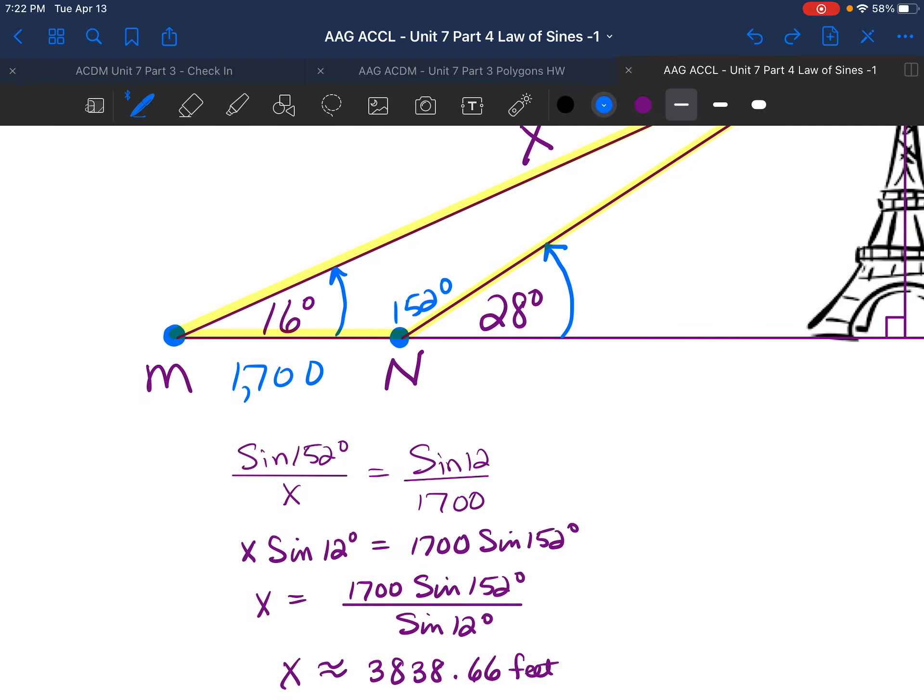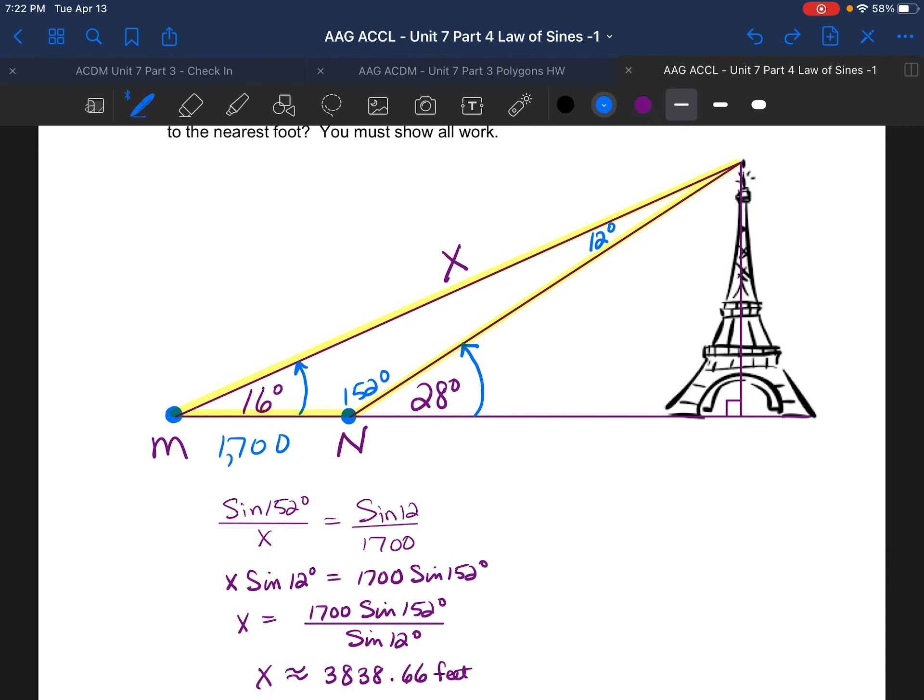Alright, there we go. So let me go up top here and back to our picture. So now we know that this side here is about 3838.66 feet. Okay, so I think we have enough information here to write one more equation and find the height of the Eiffel Tower.